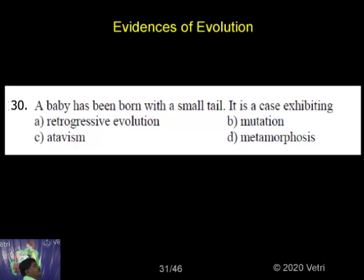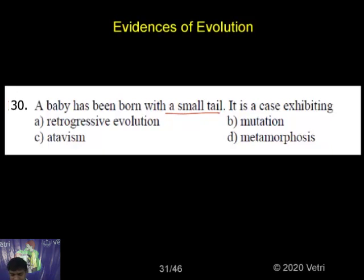The baby has been born with a small tail. Atavism is a form of the development of a tail. Development of the heart in vertebrates follows the same pattern — development of a pair of tubular structures, later developing into a two-chamber heart and fetuses developing a three-chamber heart.